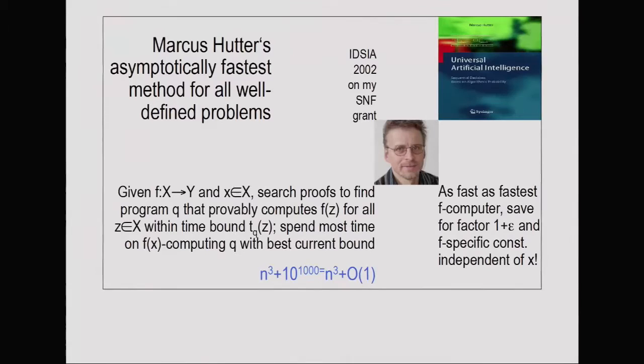There is now an optimal way of solving arbitrary computational problems which is as efficient as the fastest way of solving that type of problem, save for an additive constant which completely disappears as problems get larger. If a problem of size n can be solved within n^3 operations, this meta-algorithm of Markus Hutter will spend only n^3 operations plus O(1) on something else. As n gets larger, this O(1) pales and can be neglected.